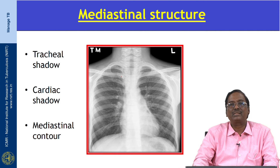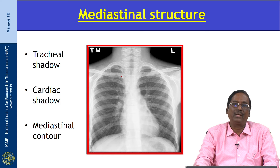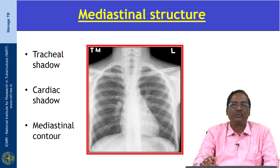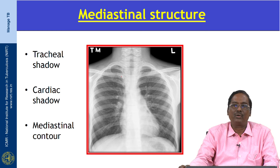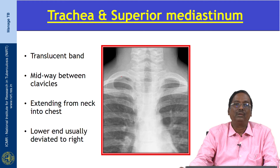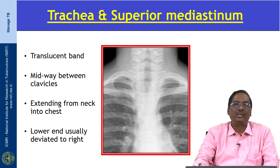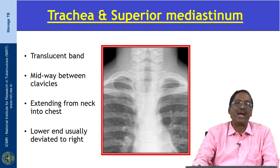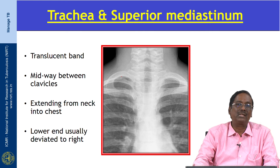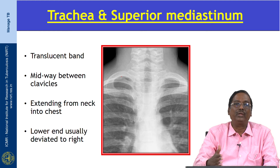Next, we have to see the mediastinal structures. The upper part of the mediastinum contains the trachea. We have to see the tracheal shadow, cardiac shadow, and mediastinal contour. First, inspect the tracheal shadow and superior mediastinum. The trachea occupies the superior mediastinum, appearing as a translucent band. It lies midway between the two clavicles and extends from the neck into the chest. The lower end of the trachea is slightly deviated to the right side — this is normal.